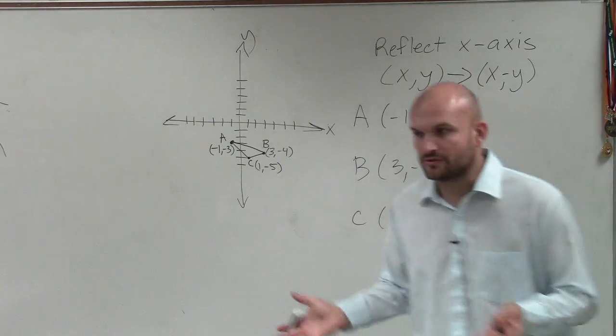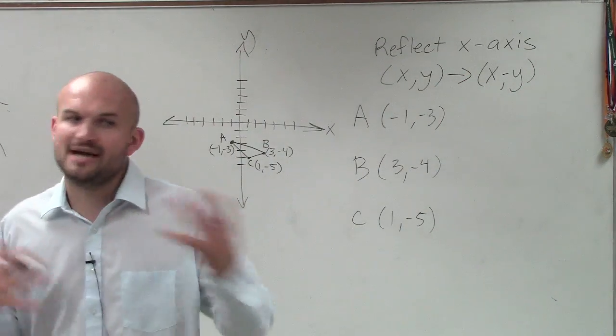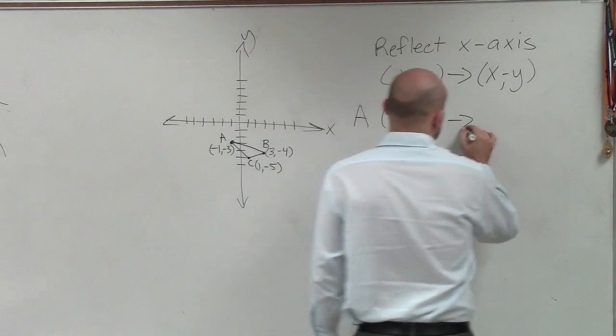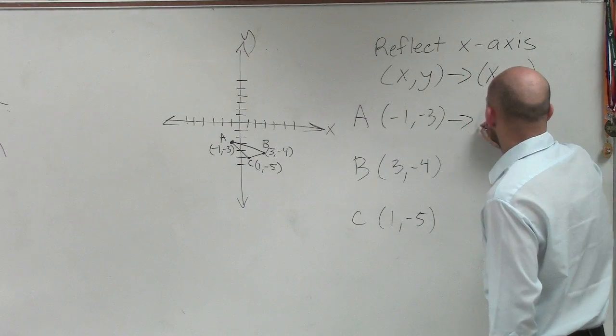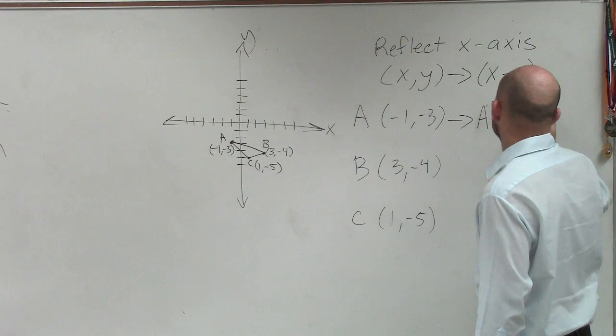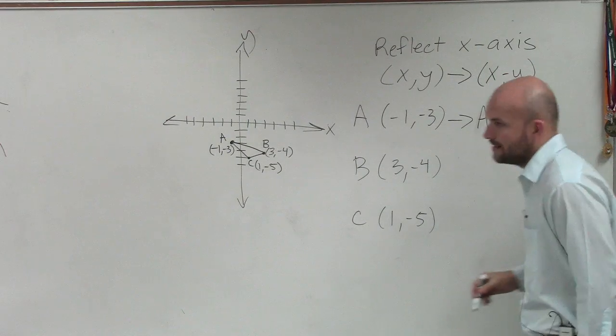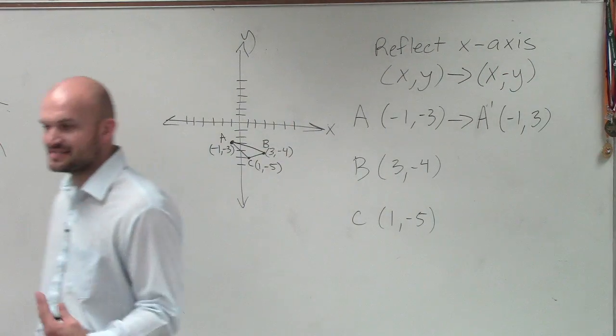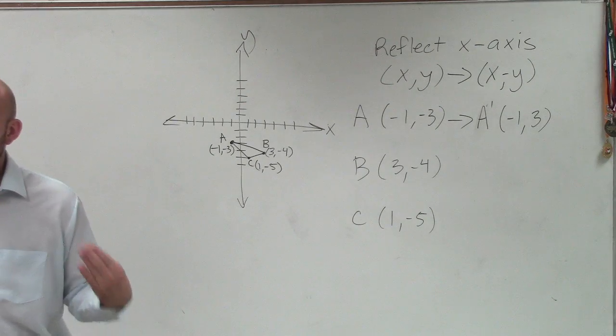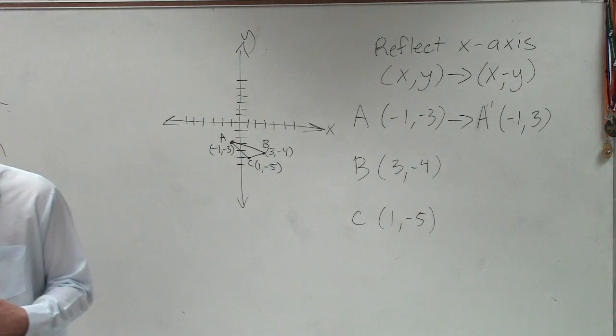So if I'm going to take the three points that I'm given and apply my transformation, this is what it's going to look like. A prime... I'm just taking the opposite. It doesn't mean it has to be negative. It means it has to have the opposite value.